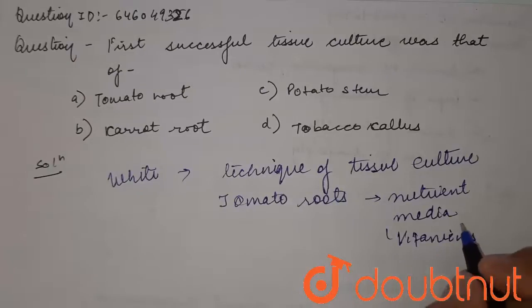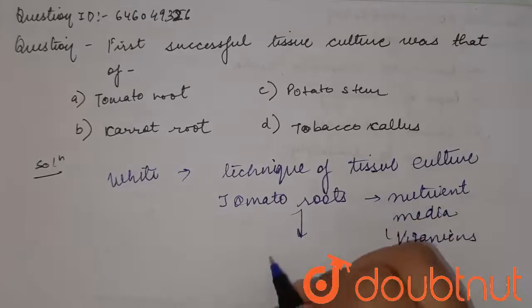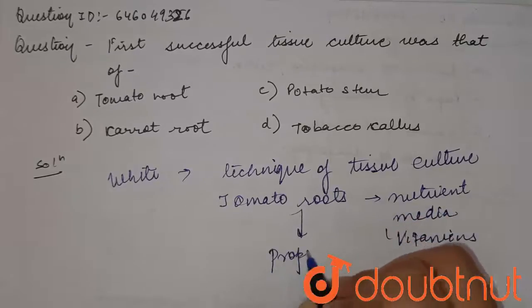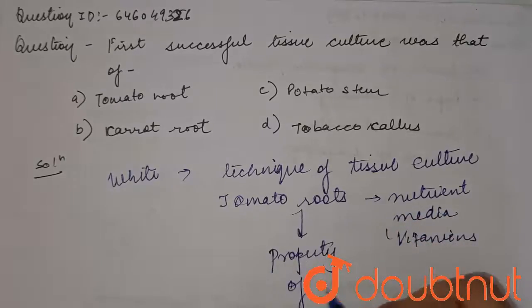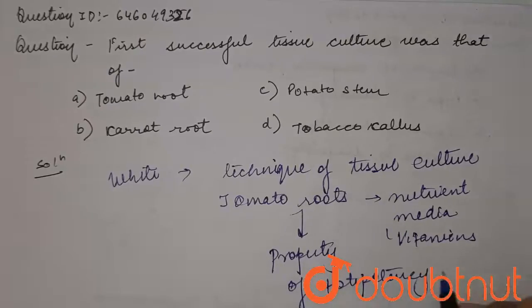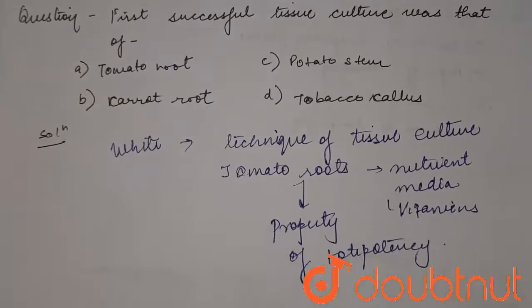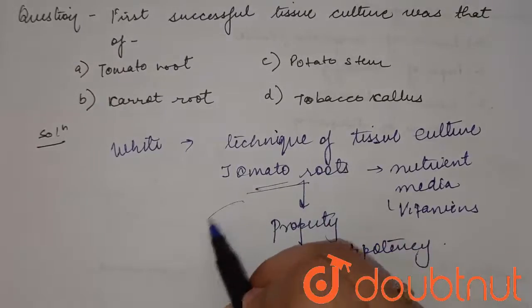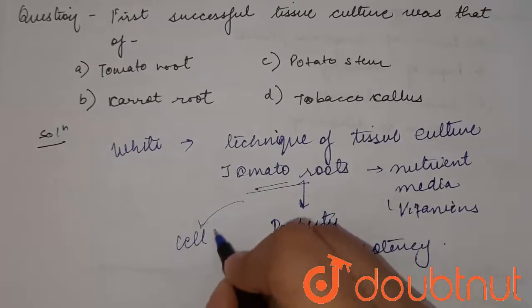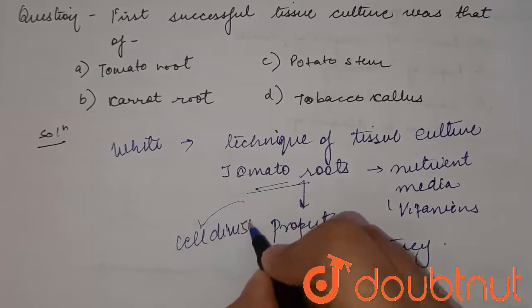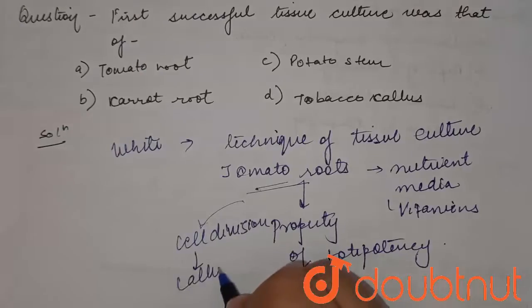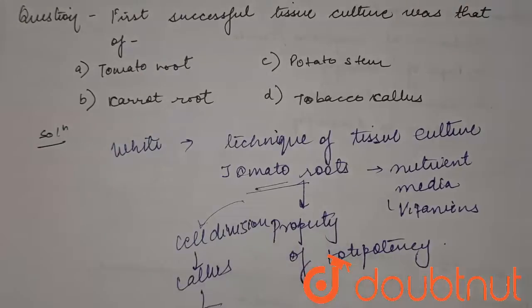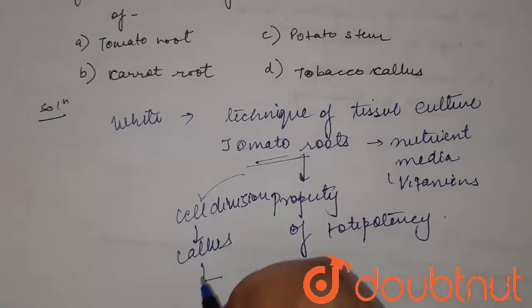The callus from the root has the property of totipotency. These totipotent cells of the roots of tomato undergo cell division, forming the callus. When the callus is treated with the hormone auxin, it promotes rooting.